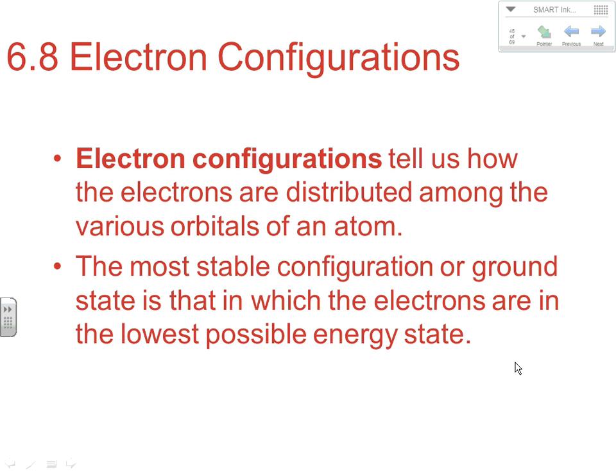A lot of this you're going to recall from last year, so good news is a lot of this is a review from pre-AP, which will make this section a little bit easier than the quantum number section we looked at yesterday. Electron configurations tell us how the electrons are distributed among the various orbitals in an atom. The most stable configuration, or ground state, is that in which electrons are at the lowest possible energy state — we call that the Aufbau principle.